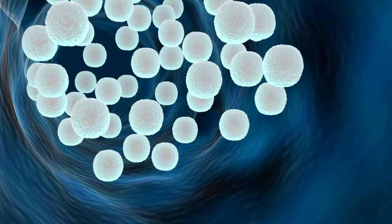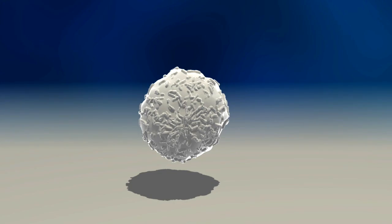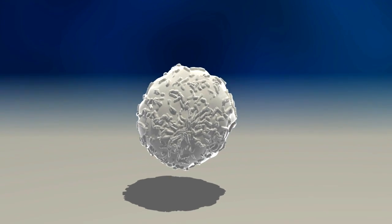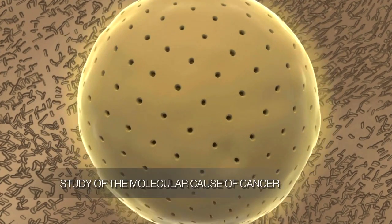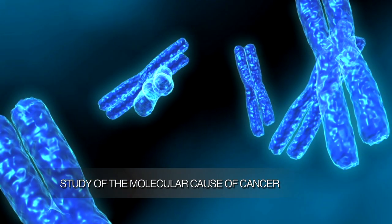Cancer originates due to the accumulation of damage in the genetic material of the cell. Therefore, it is necessary to look into the nucleus of the cell and read its genome in order to have a detailed knowledge of the disease.